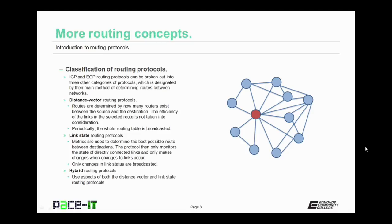Then there are link state routing protocols. Metrics are used to determine the best possible route between destinations — it doesn't really matter how many hops there are. Once the route has been established, these protocols only monitor the state of directly connected links and only make changes to their routing tables when changes to the links occur. With link state routing protocols, only changes in link status are broadcast. And finally, there are hybrid routing protocols, which use aspects of both distance vector and link state routing protocols.